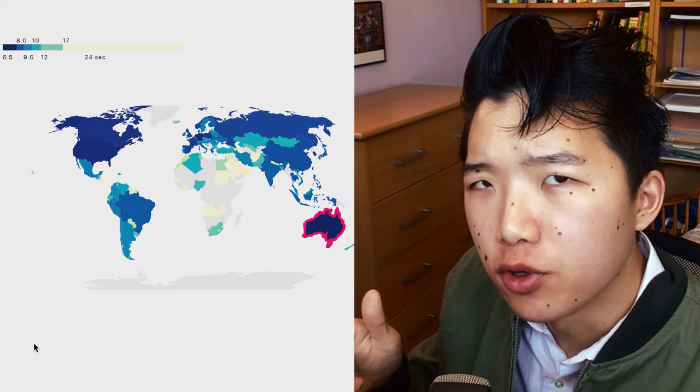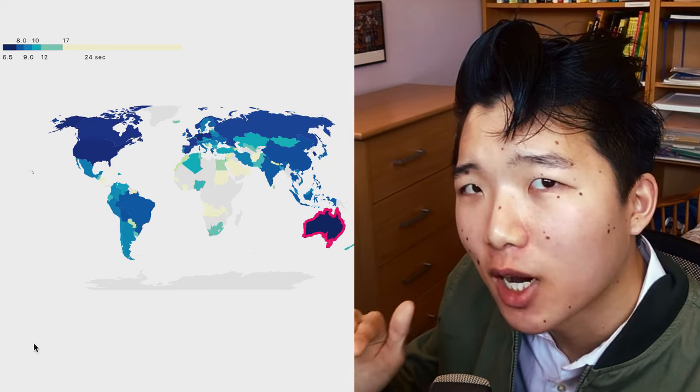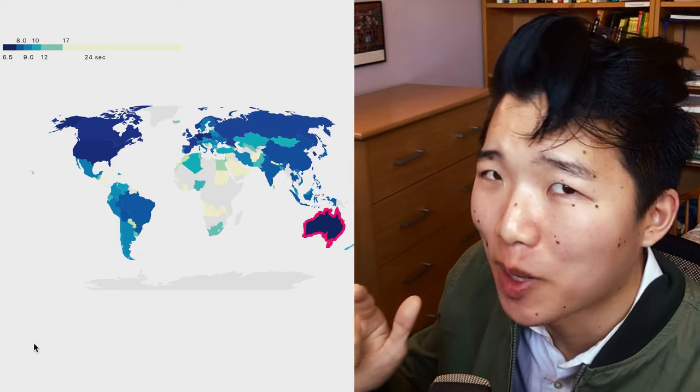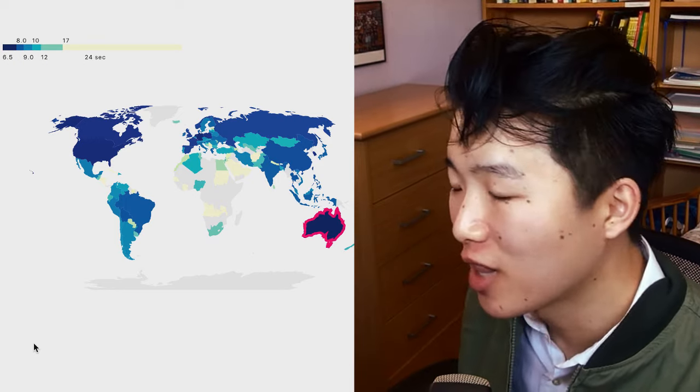Well, you're gonna love this. This is the world's coolest map. It's a map where every country's color is determined by the fastest three-by-three average performed by someone from that country. That's right, we are literally dividing the cubing community by their country of origin.